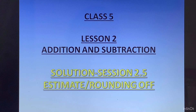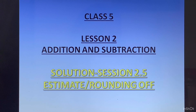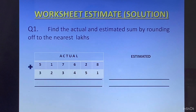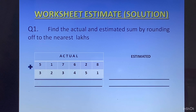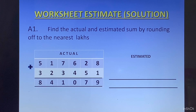Welcome students to Class 5 Maths Lesson 2: Addition and Subtraction. Solutions to Session 2.5: Estimates and Rounding Off. The first question in the worksheet was to find the actual and the estimated sum by rounding off to the nearest lakhs.